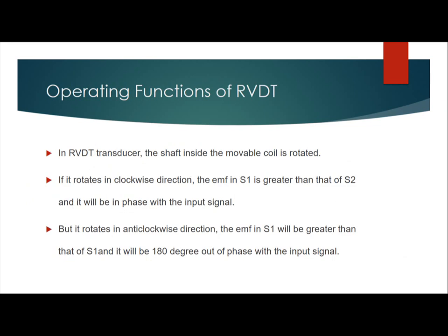Operating functions of RVDT. In the RVDT transducer, the shaft inside the multi-way coil is rotated. If it rotates in a clockwise direction, the EMF in S1 is greater than that of S2 and it will be in phase with the input signal. As it rotates in the counter-clockwise direction, the EMF in S2 will be greater than that of S1 and it will be 180 degrees out of phase with the input signal.